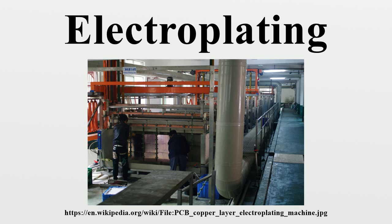The rate at which the anode is dissolved is equal to the rate at which the cathode is plated, vis-à-vis the current through the circuit. In this manner, the ions in the electrolyte bath are continuously replenished by the anode. Other electroplating processes may use a non-consumable anode such as lead or carbon. In these techniques, ions of the metal to be plated must be periodically replenished in the bath as they are drawn out of the solution.